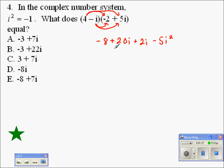Now it's time to combine like terms and simplify. We have negative 8. 20i plus 2i is 22i. And again, like I said earlier, we see i squared is equal to negative 1. We have an i squared here. We're going to substitute in negative 1 for it. So we have negative 5 times negative 1.